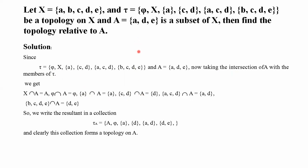پھر A ∩ {a,c,d} لیں گے — A میں c نہیں ہے، تو صرف {a,d} آئے گا۔ اور A ∩ {b,c,d,e} لیں گے — B اور C نہیں ہیں A میں، تو {d,e} آئے گا۔ اب جو resultant collection بنی ہے — relative topology — اس میں members ہیں: φ, {a}, {d}, {a,d}, {d,e}, {a,d,e}۔